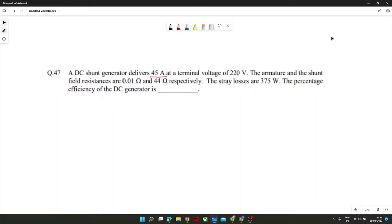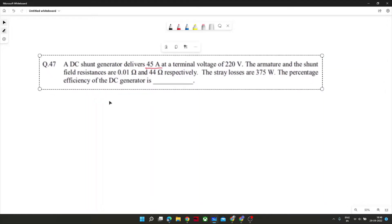So this is the problem, I hope you are able to see. A DC shunt generator delivers 45 ampere at terminal voltage of 220 volt. Armature resistance and field resistance are provided, and it is shunt connected.